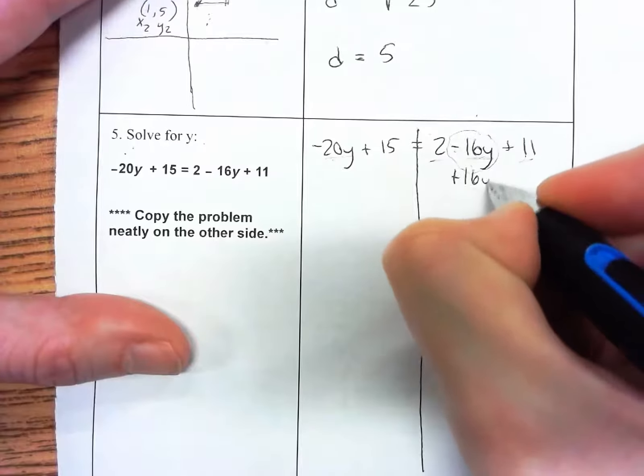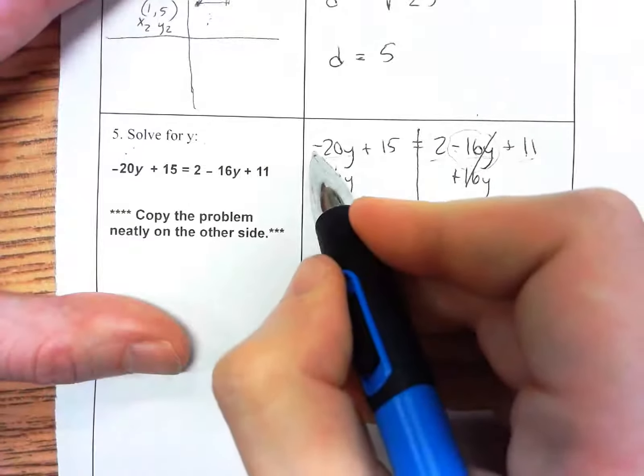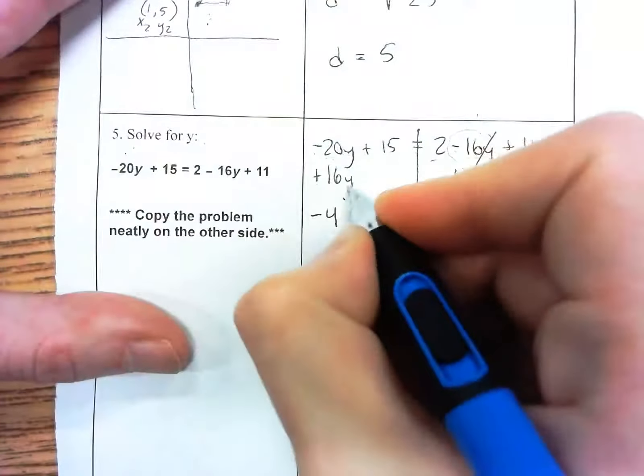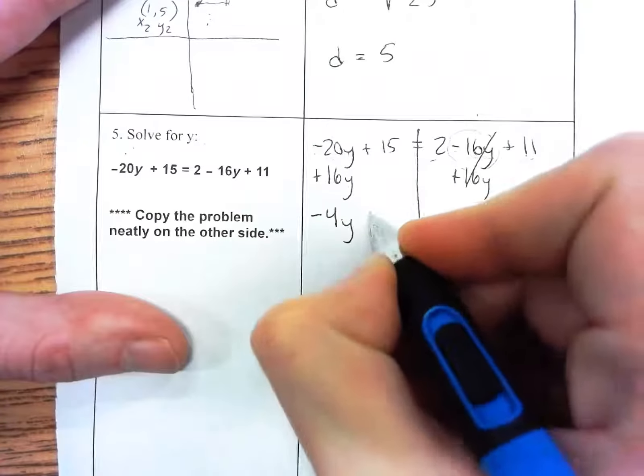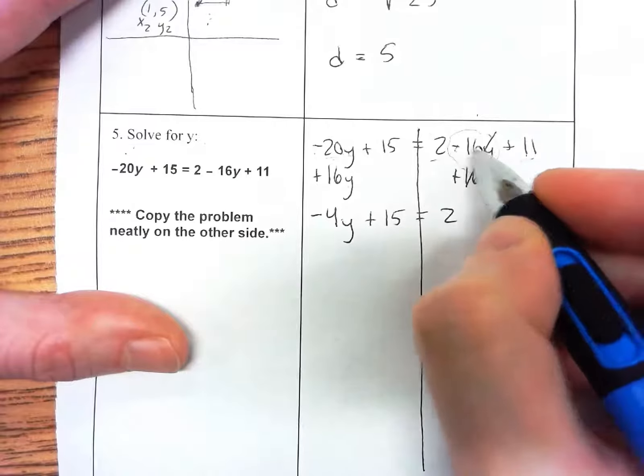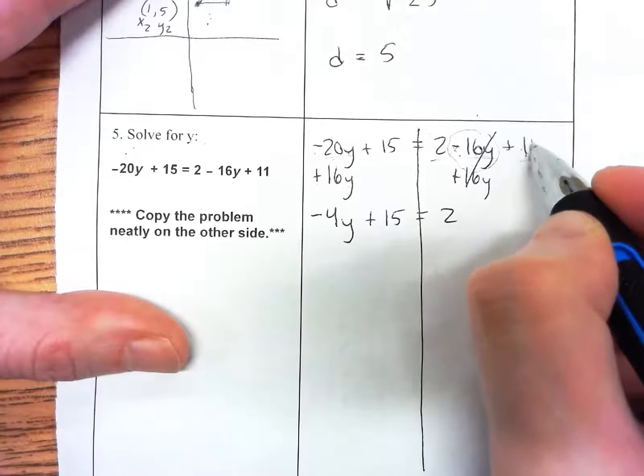I'm going to add 16y on both sides. This will cancel, and negative 20 plus 16 is negative 4, and we carry down that y. I'm going to carry down everything else: 15 equals 2. This symbol went with the 16y, so we're not going to use minus plus 11, just plus 11.